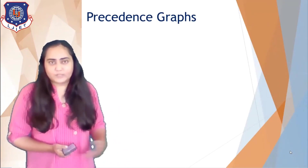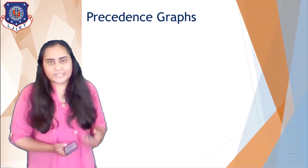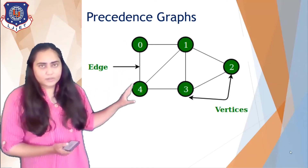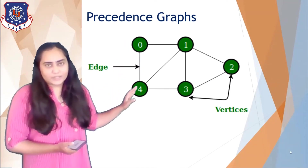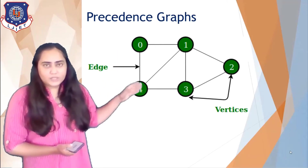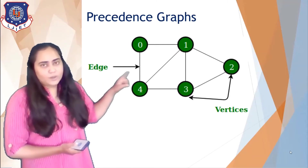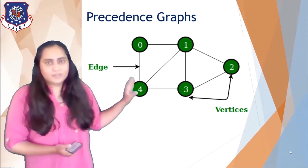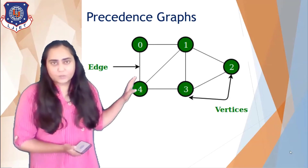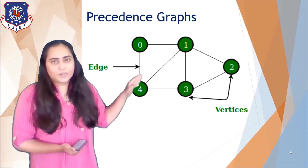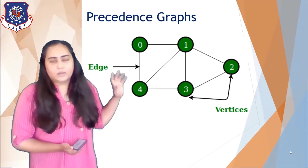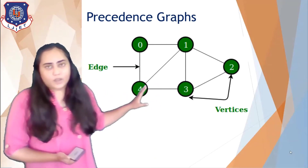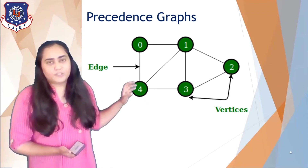Before we understand what a precedence graph is, let me explain the graph data structure. There are vertices — shown as circles — and two vertices are connected by an edge, shown as a line. This is called a graph, and using this data structure (implemented with a linked list or a matrix), I can create a precedence graph.